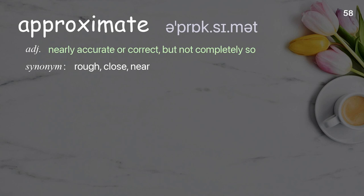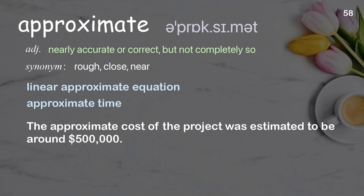Approximate: nearly accurate or correct, but not completely so. Examples: linear approximate equation; approximate time. The approximate cost of the project was estimated to be around $500,000.